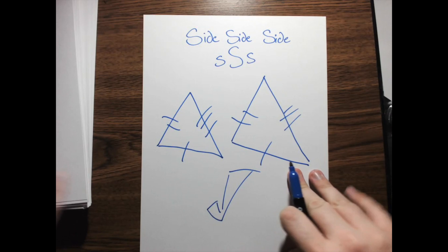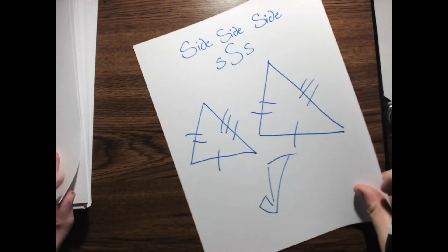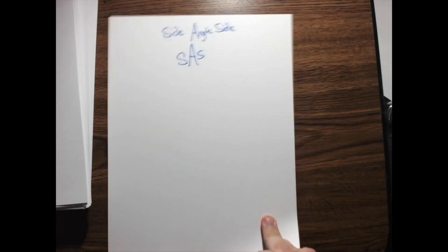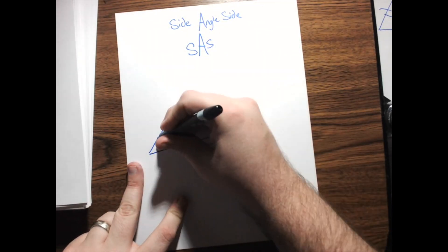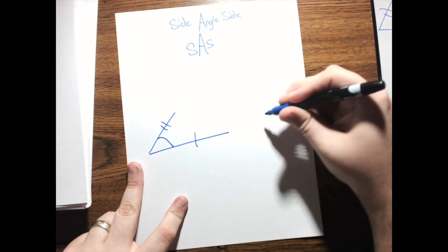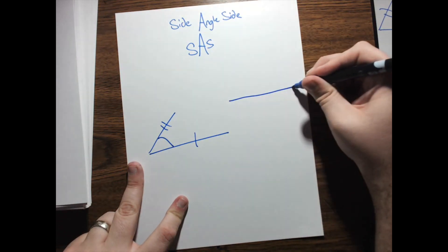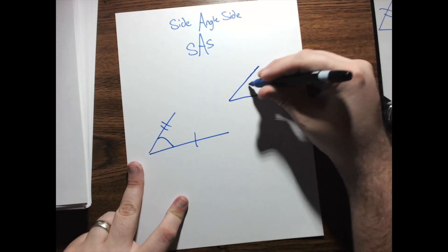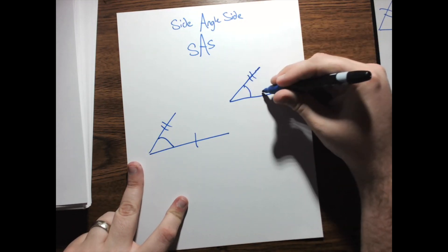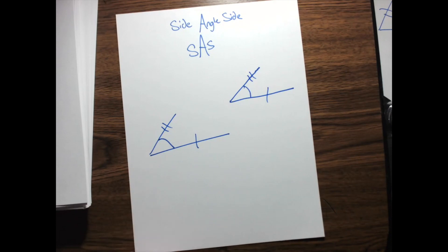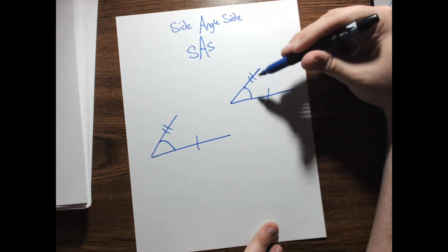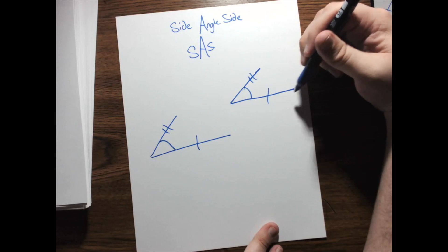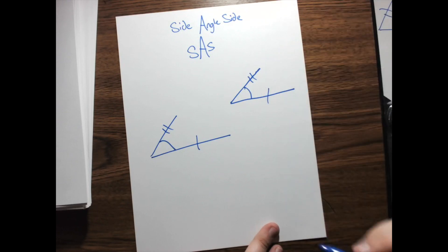That's side, side, side. But we don't only learn about side, side, side. We also learn about side, angle, side. So, with side, angle, side, the idea is if I had two triangles and they were formed by the same angle and the same two sides, there's only one line I can draw that goes from this end point to this one.